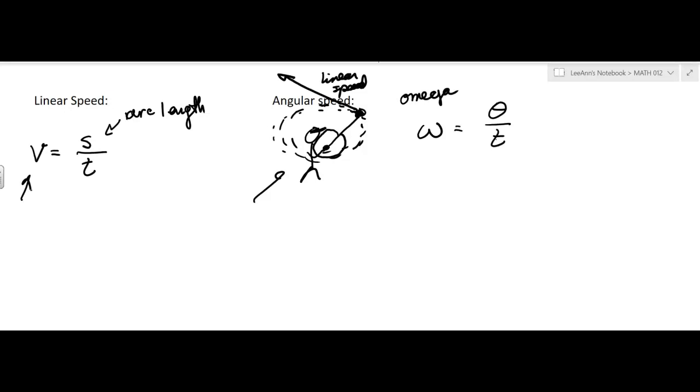Okay, now if I put this together, if I take V and I say that's equal to s over t, but then I say, well, s, I have a formula for arc length. It's r theta. So I would have that, and then if I replace that theta over t with omega, then I get r omega.